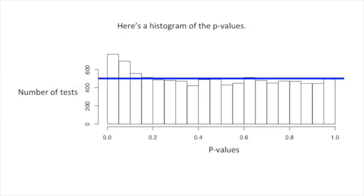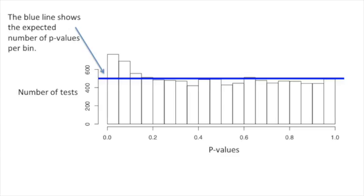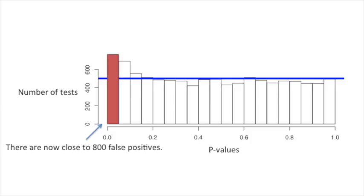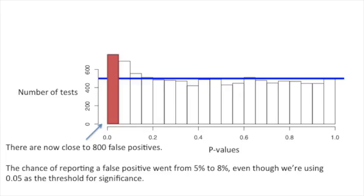Here's a histogram of the new p-values. The blue line shows the expected number of p-values per bin. There are now close to 800 false positives. The chance of reporting a false positive went from 5% to 8%, even though we're using 0.05 as the threshold for significance.